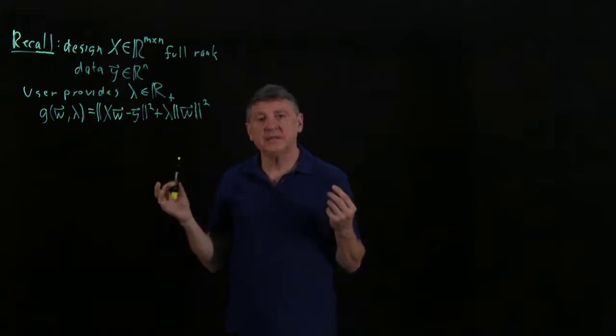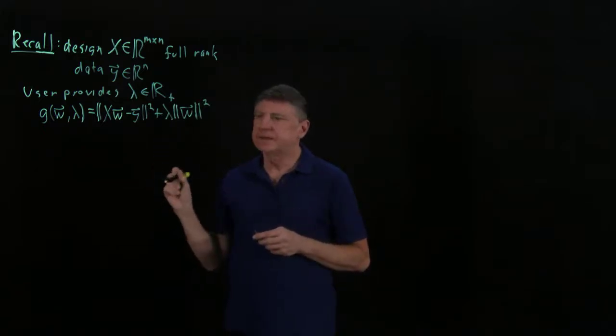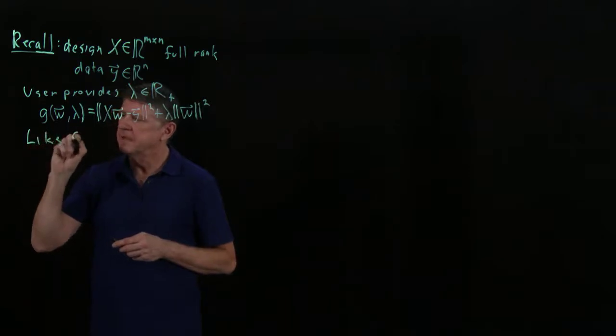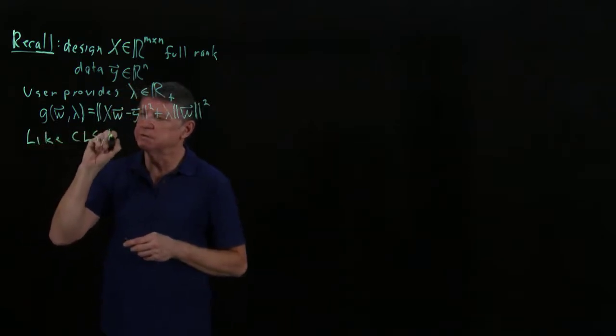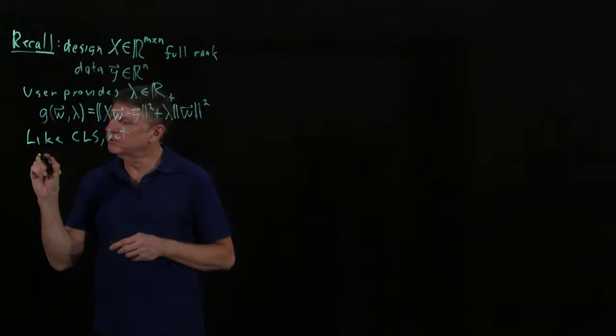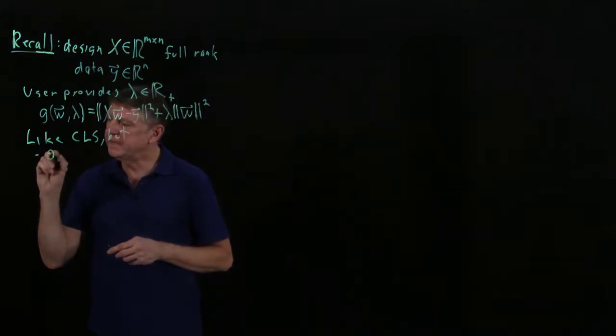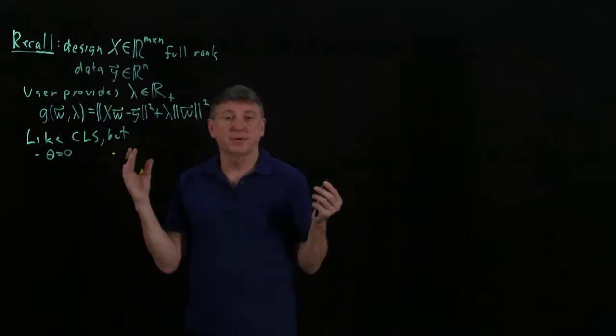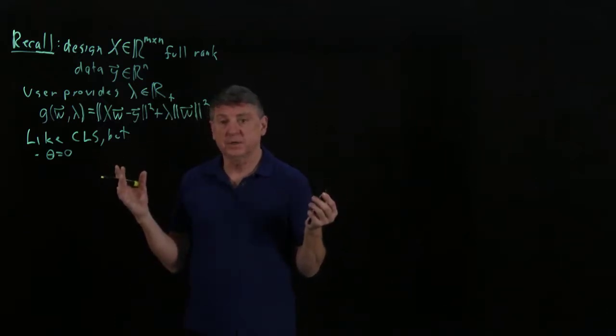Now, let's look at this. This is like CLS, constraint least squares, but there are two main differences. One is that theta equals zero. That is, the hyperparameter theta doesn't appear in this formula.